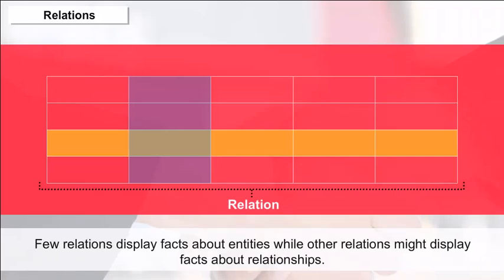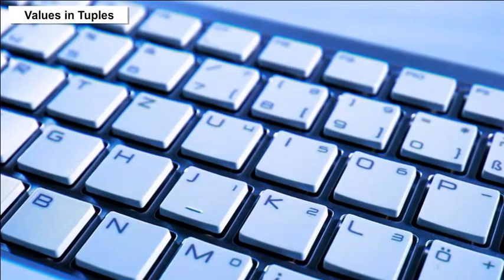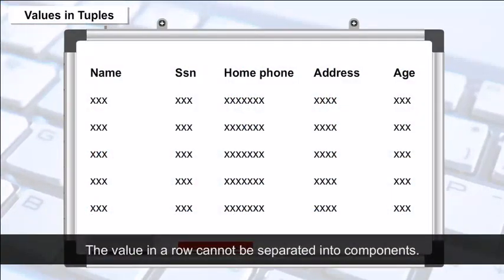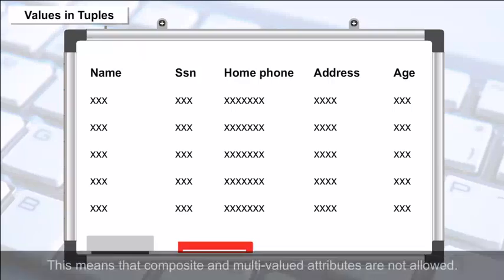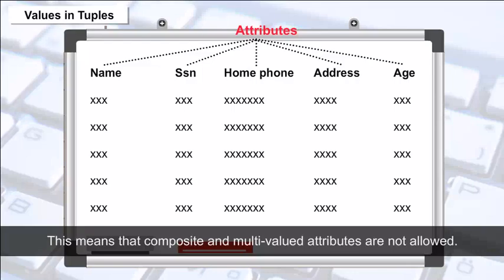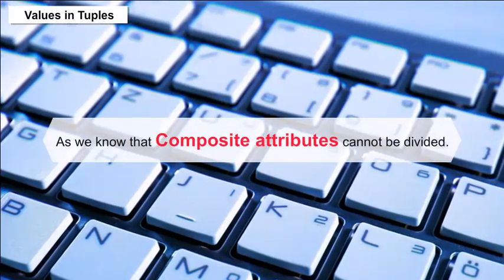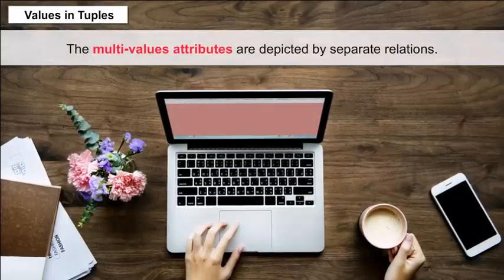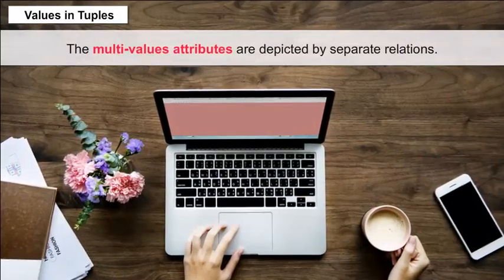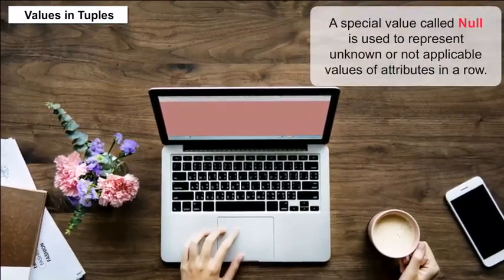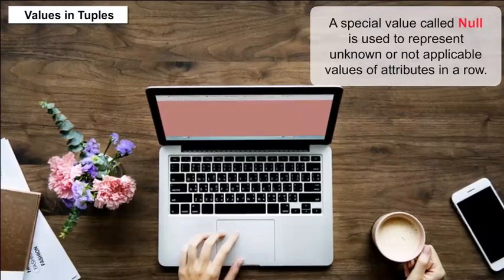Values in Tuples — the value in a row cannot be separated into components. This means that composite and multi-valued attributes are not allowed. Multi-valued attributes are depicted by separate relations. A special value called NULL is used to represent unknown values.